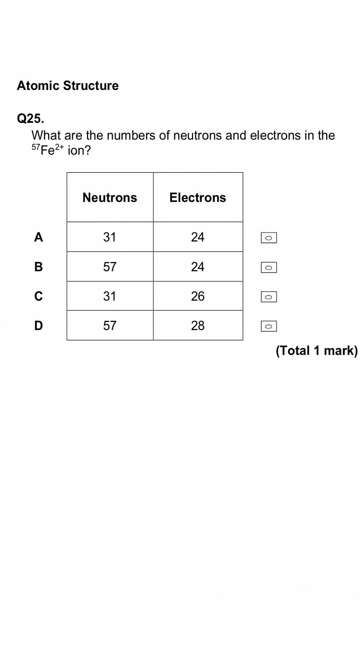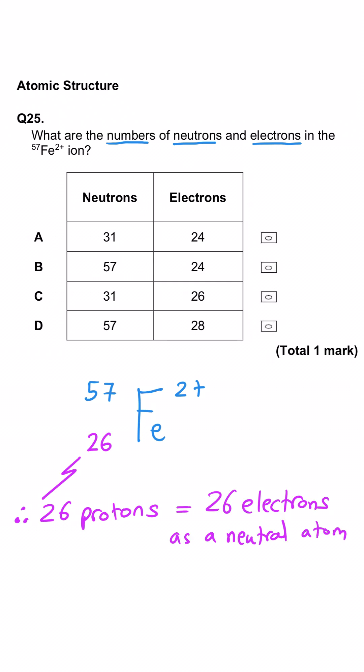This question is asking us what the number of neutrons and electrons are for the iron 2 plus ion with a mass number of 57. So first of all we need to look at the atomic number. The atomic number is 26 for iron which means it's got 26 protons and 26 electrons when it is an atom.